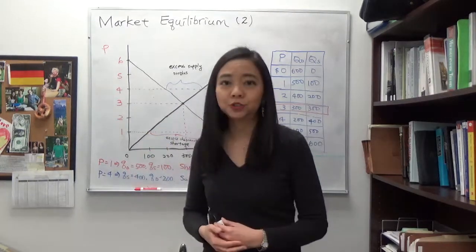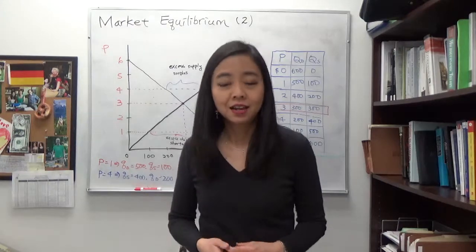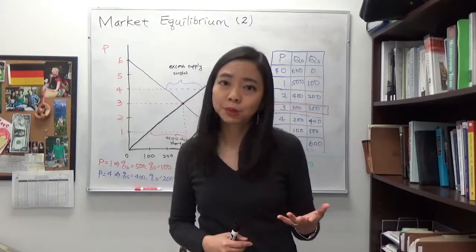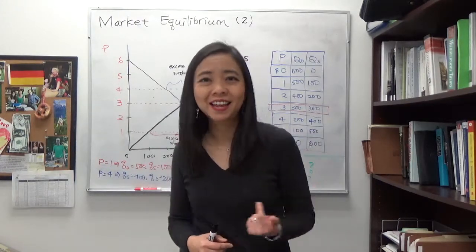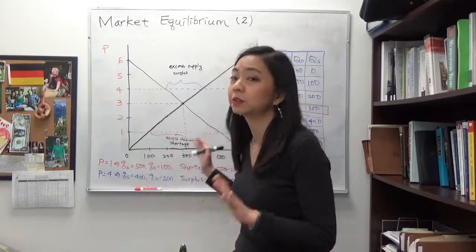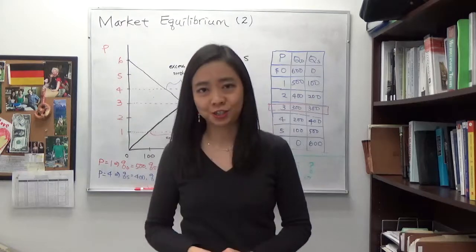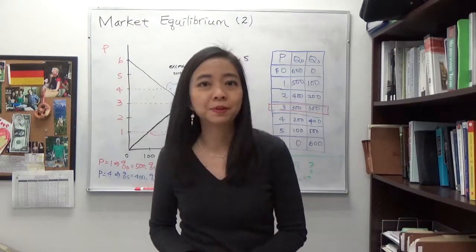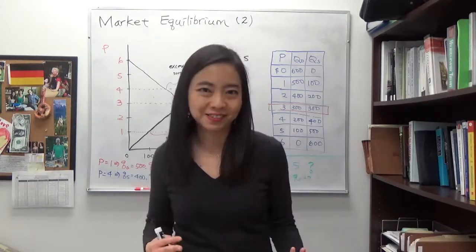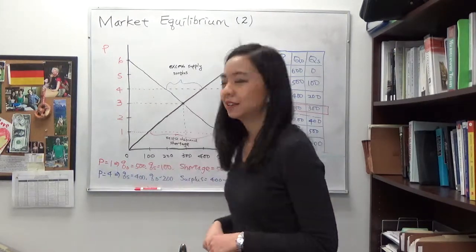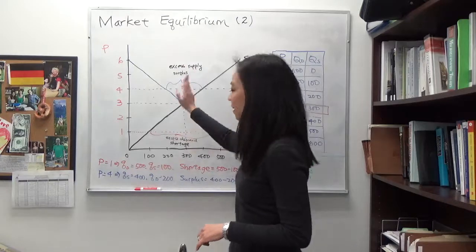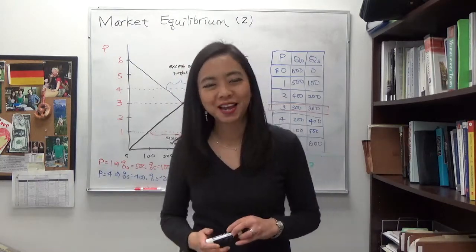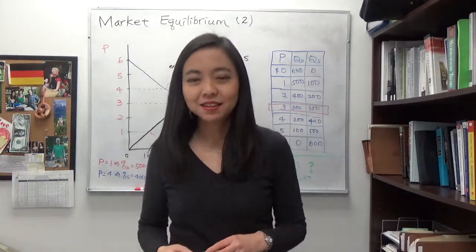And the story doesn't just end there. If the price deviates from equilibrium price, then the market will typically adjust itself. I say typically because it's not always the case. So think about an example of surplus or excess supply.